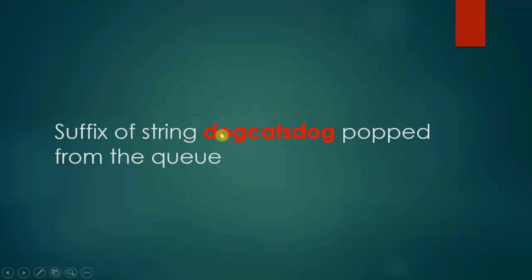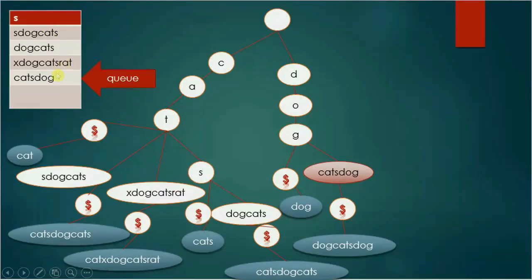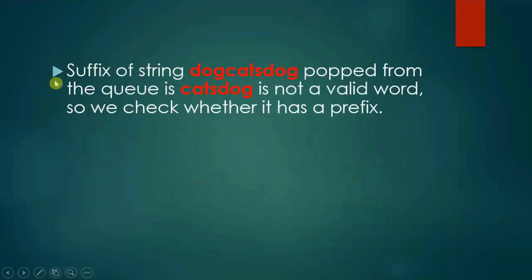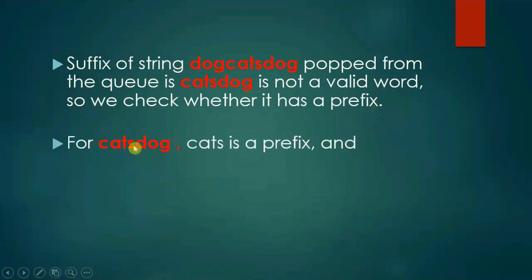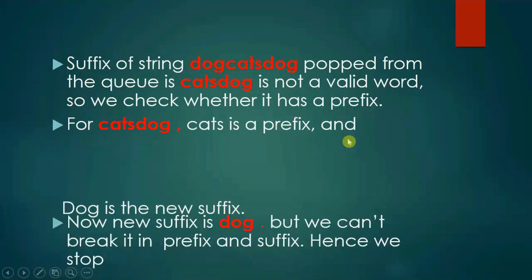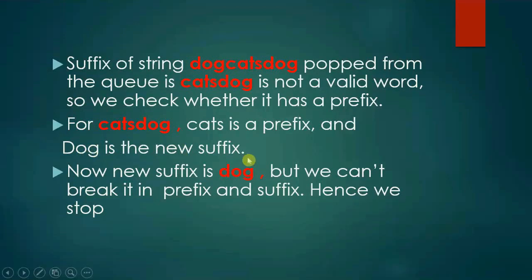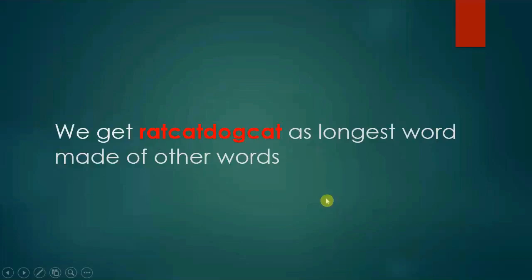Example: dog cats dog. The suffix of 'dog cats dog' popped from the queue is 'cats dog', which is not a valid word, so we check whether it has a prefix. For 'cats dog', 'cats' is a prefix and 'dog' is the new suffix. Now the new suffix is 'dog', but we can't break it into a prefix and suffix, so we stop. Repeating this process for all entries, we get 'rat cat dog cat' as the longest word made of other words.